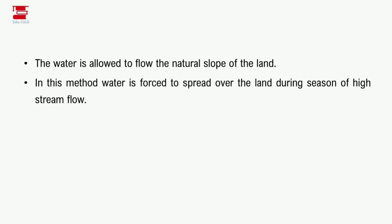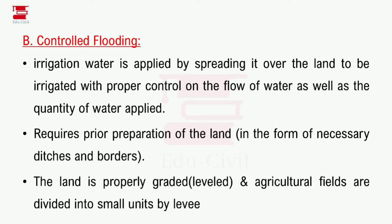The second classification is controlled flooding. In controlled flooding, the irrigation water is applied by spreading it over the land to be irrigated with proper control on both the flow of water and the quantity of water. That is called controlled flooding.